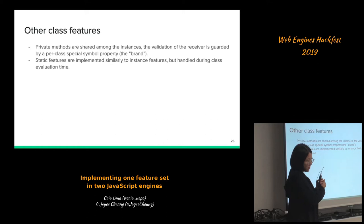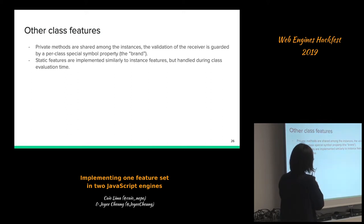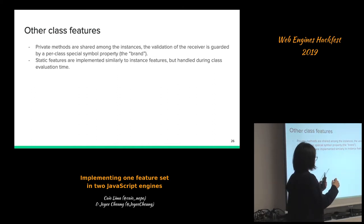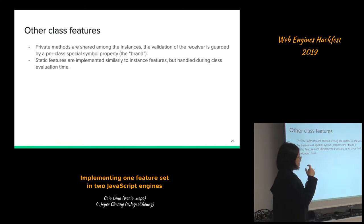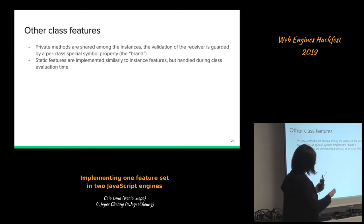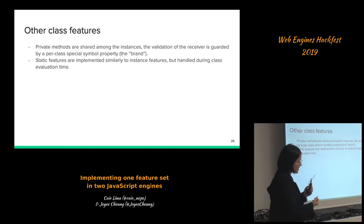Other class features are also implemented using this infrastructure. Private methods are shared among instances, so during class evaluation time we do the same as for private fields, but receiver validation is guarded by a per-class special symbol property — we use one single per-class symbol to check whether the receiver is valid. Static features are implemented similarly to instance features, with the difference that they are handled during class evaluation time instead of in the constructor.